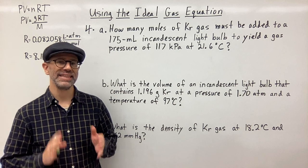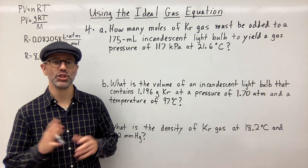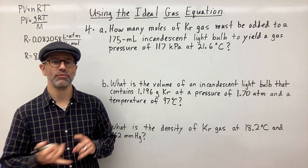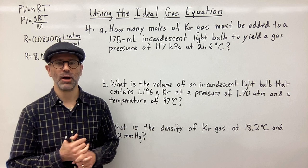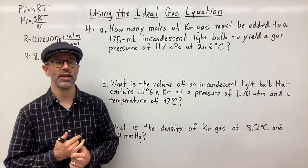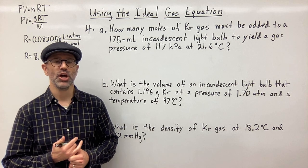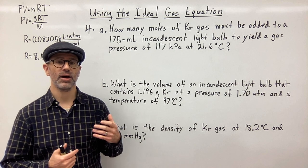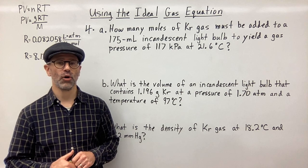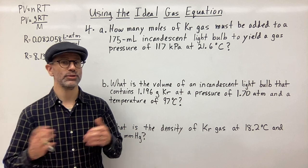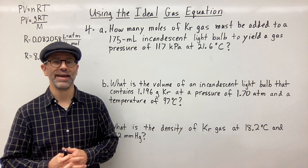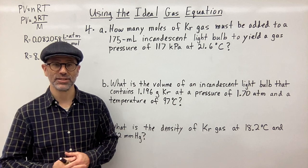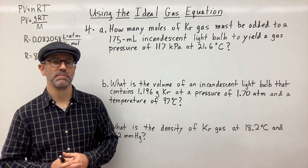One way you can know that you will need to use the ideal gas equation is if there is no change going on in the problem. If there is a change — like changing the volume, temperature, or amount of the gas — then you're going to use another equation like Boyle's Law, Charles's Law, Avogadro's Law, or Gay-Lussac's Law. But if there is no change, then the ideal gas law is the equation you'll be using.